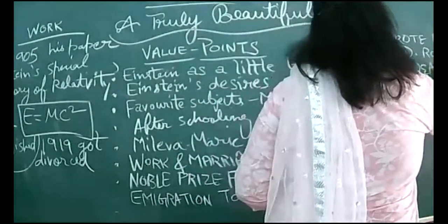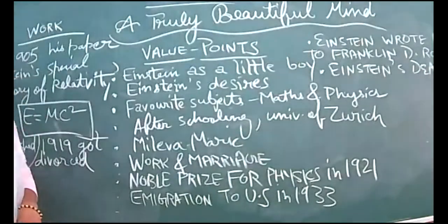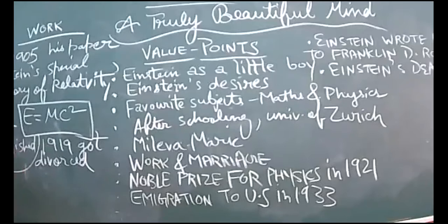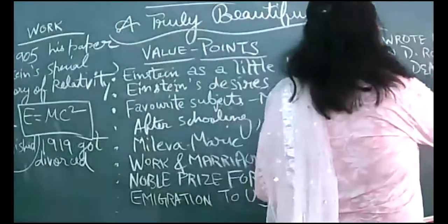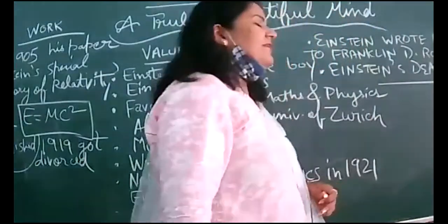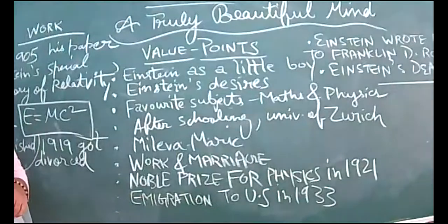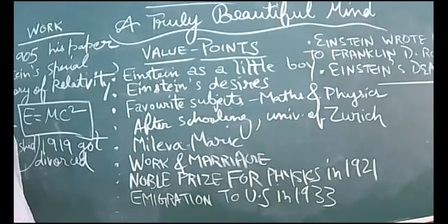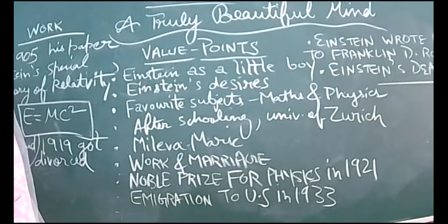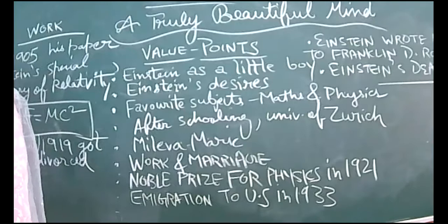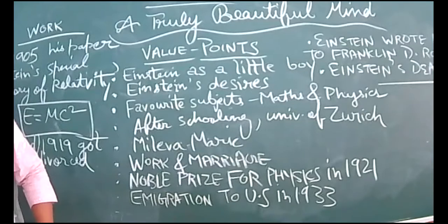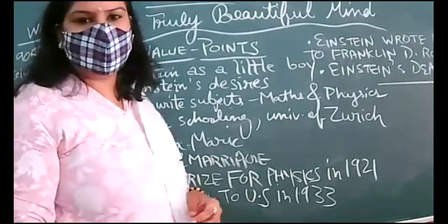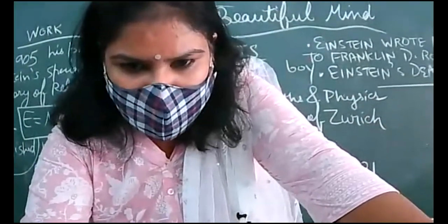Last point is Einstein's death. After that I'll be asking you the MCQs based on this chapter. I'll be sharing the screen with children at home and you can write on your notes. Einstein died in 1955 and the world celebrated him as a visionary and world citizen. He was not citizen of one nation. He died in 1955 and everyone started considering him as a world citizen. He was a visionary. When he died, what was his age? 76. He died at the age of 76. This chapter is based on facts.